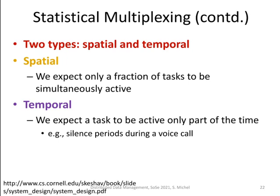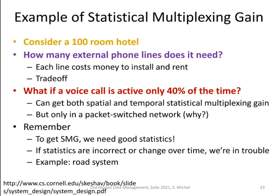There are two types: spatial and temporal. Spatial means we expect a fraction of tasks to be simultaneously active. Temporal means we expect a task to be active only some part of the time. Consider a hotel with 100 rooms — how many external phone lines do you need? 100 would be the answer if everyone is talking on the phone at all times, but this is not realistic. If you know that a voice call is active only 40% of the time, then you can achieve both spatial and temporal statistical multiplexing gain.